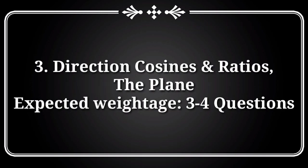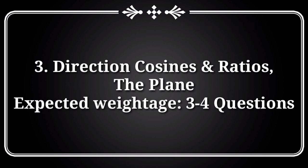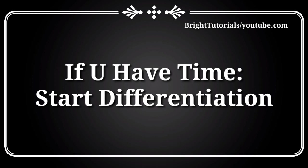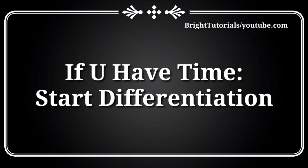After that, you should start with Direction Cosines and Ratios and the Plane. By combining these chapters, 3 to 4 questions will be asked in M set. After completing these chapters, if you have time, start with Differentiation. In this chapter, focus on integration concept interlink questions given in the form of UV or U by V method.